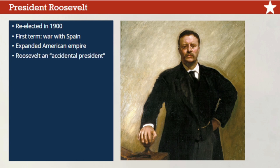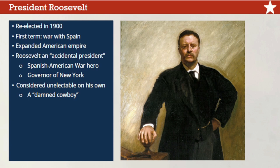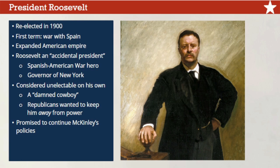Roosevelt was the very definition of an accidental president. Before becoming vice president just six months earlier, he was one of the best-known heroes of the Spanish-American War and had served as governor of New York. But Roosevelt was seen as too controversial, unpredictable, and too young to ever be elected president on his own. Even in his own Republican Party, many considered him a loose cannon or a 'damned cowboy.' He had been chosen as McKinley's running mate partly to keep him away from real government power. Now Theodore Roosevelt was president and in a position to make history.